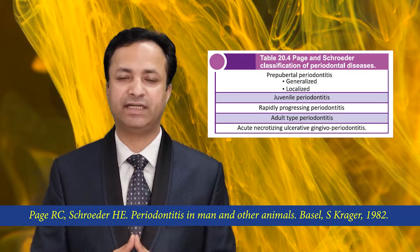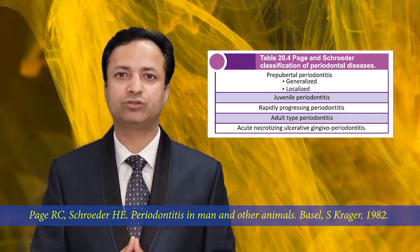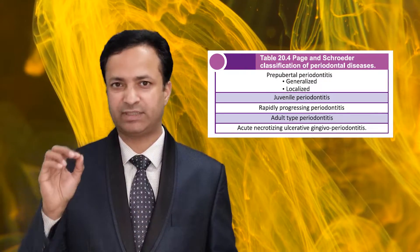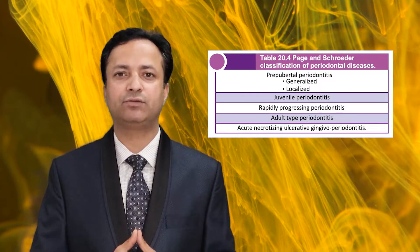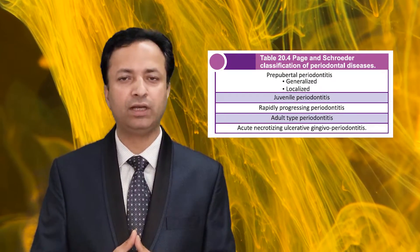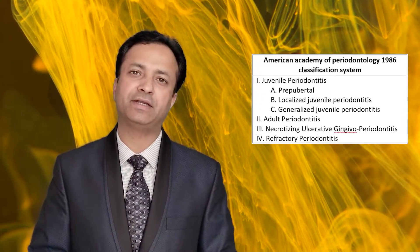The fifth condition was acute and painful, described in patients with immunodeficiency or severe malnutrition. The Page and Schroeder classification system acted as the foundation for many future classification systems, including the American Academy of Periodontology 1986 classification system.